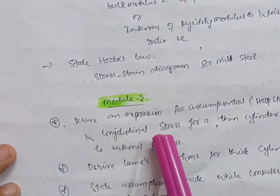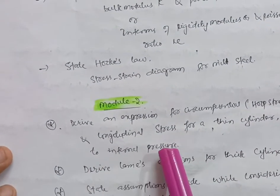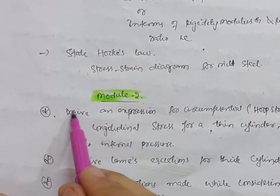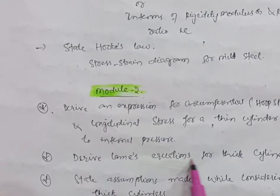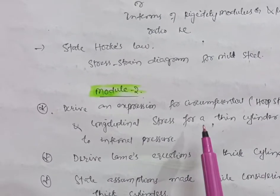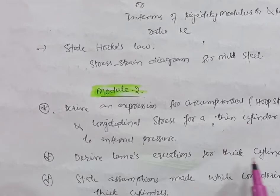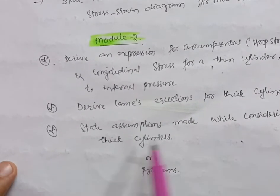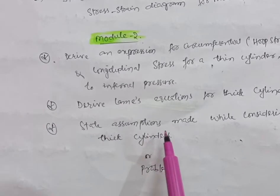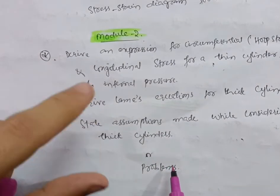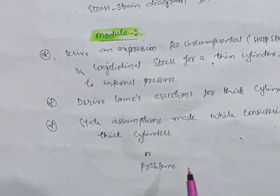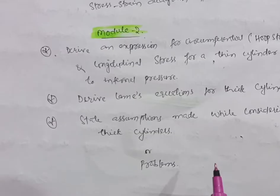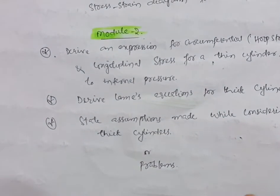In Module 2, derive an expression for circumferential (hoop) stress and longitudinal stress for a thin cylinder subjected to internal pressure — this is a definite question. Also, derive Lamé's equations for a thick cylinder. There are two derivations: one for the thin cylinder and one for the thick cylinder. Also state the assumptions made while considering thick cylinders, and go through related problems based on these derivations.